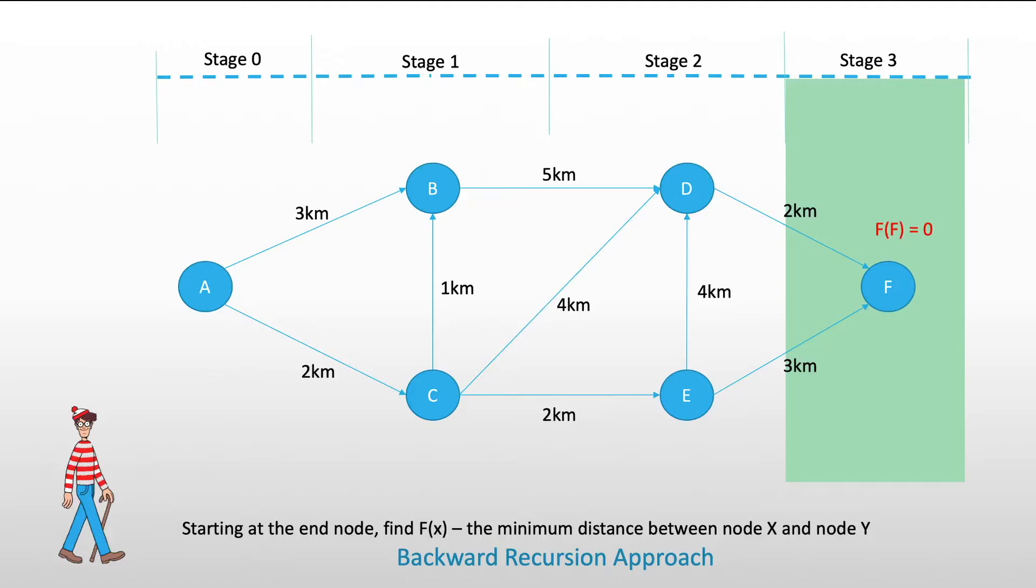f of F here is equal to 0, because, of course, there is no distance to go to itself. Thus, f of F is equal to 0. Notice that at the left side of the screen, we will be writing the entire solution for each of the nodes.